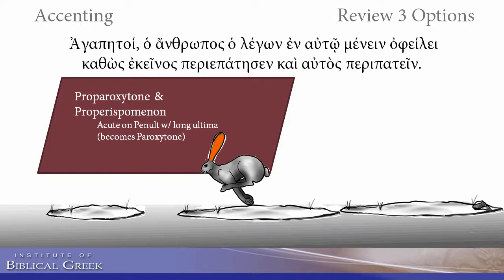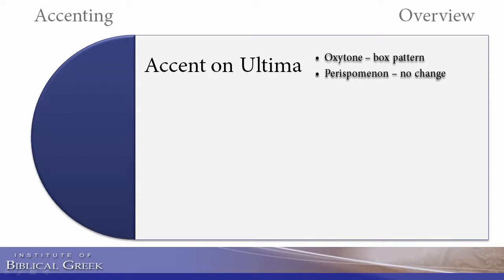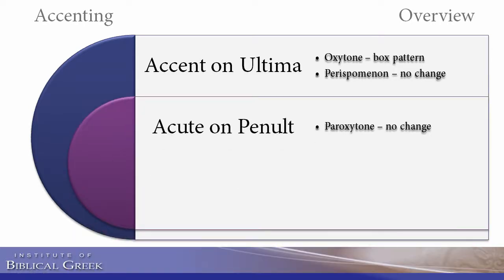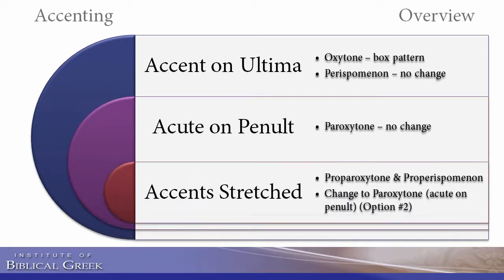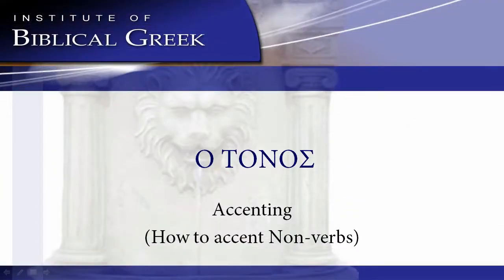Even verbs will basically follow this furthest-stretch-position type of pattern, but I'll get more into that in the next video. To review one more time: we can accent on the ultima following the box pattern or staying there; we can have an acute on the penult — paroxytone — which never changes; or we can have the accents stretched to their furthest position, and when the ultima becomes long, we just change it back to paroxytone. That's it for accenting non-verbs. I hope this video was helpful, and I hope you'll watch the next video on how to accent verbs — the recessive accent. Please check us out at facebook.com/IBGpage and our website at www.biblicalgreek.org. Thanks for watching.